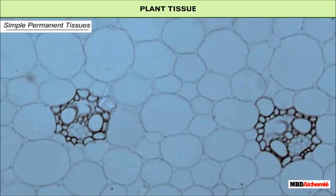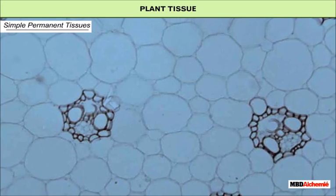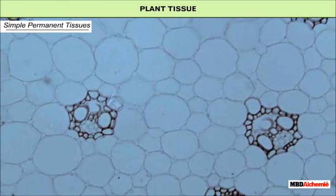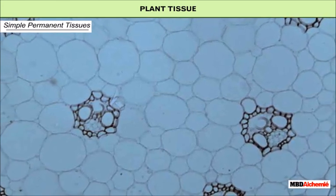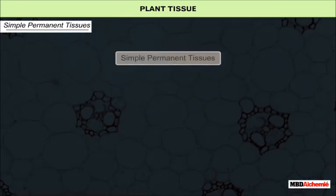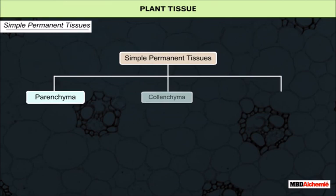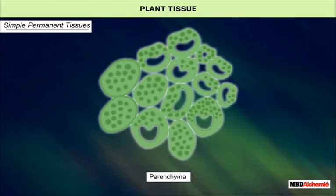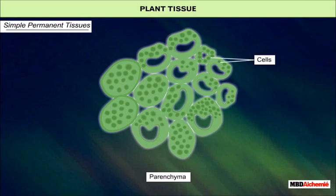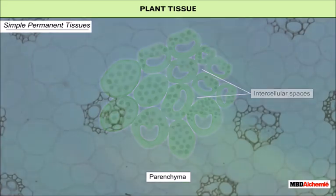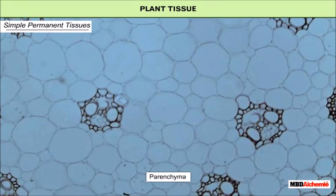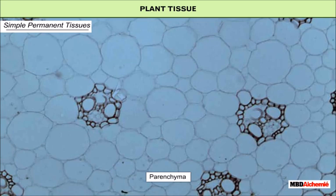Simple permanent tissues are composed of similar types of cells having common origin and function. They are of three types: parenchyma, colenchyma and sclerenchyma. Parenchyma is formed of thin-walled, living and oval-shaped cells. These are loosely packed with large intercellular spaces. Parenchyma provides support to plants and also stores food.